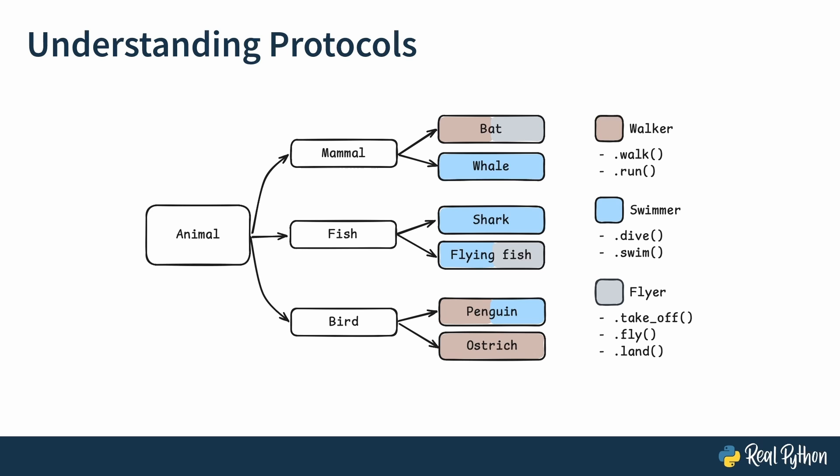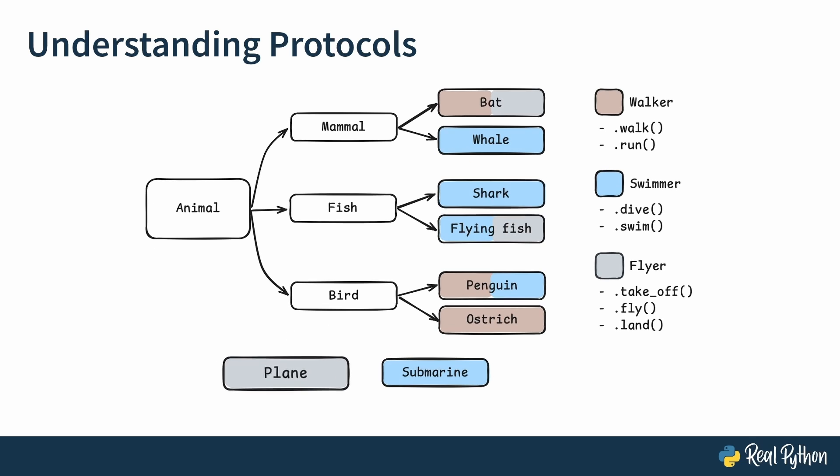And so much so that you could even think about having planes and submarines. Because planes, they can also take off and fly and land. So they might be seen as flyers. And submarines can also dive and swim. So those could also be seen as swimmers.